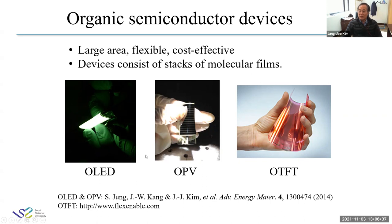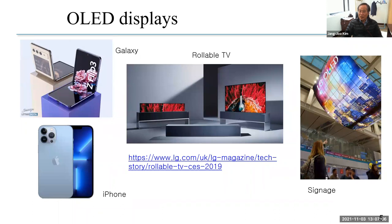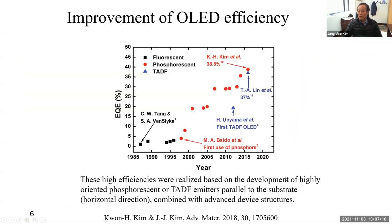A device consists of stacks of molecular films. OLEDs use many layers — sometimes 20 layers for stacked devices. I have been working on OLED and OPV for more than 30 years. OLEDs are now dominant in displays — for small-sized displays, TVs, signage, and so on. Since Tang and VanSlyke reported EL from OLEDs for the first time in 1987, efficiency has improved significantly and enormously to about 40% in recent years.